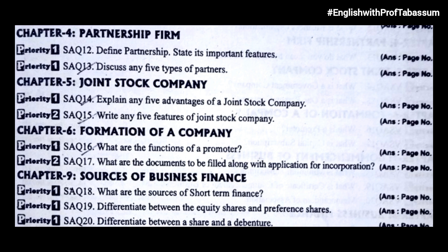Chapter 5, joint stock company: explain any five advantages of a joint stock company; write any five features of joint stock company. Chapter 6, formation of a company: what are the functions of a promoter; what are the documents to be filed along with application for incorporation. Chapter 9, sources of business finance: what are the sources of short-term finance; differentiate between equity shares and preference shares; differentiate between a share and a debenture.